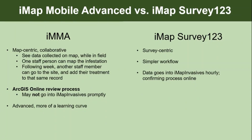That added power does come with higher complexity. There's an ArcGIS Online review process, and as Christopher mentioned, not every organization has access to ArcGIS Online, so that might be a barrier. Another thing to consider is how fast the data gets into IMAP: with Survey 123, the data goes in hourly once you upload it. With IMAP Mobile Advanced, it might not go in as promptly — it sits in ArcGIS Online until the data has been reviewed by the person collecting it, at which point it's flagged as ready for IMAP and included in the next crosswalk to IMAP Invasives.